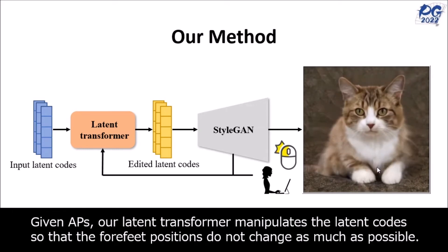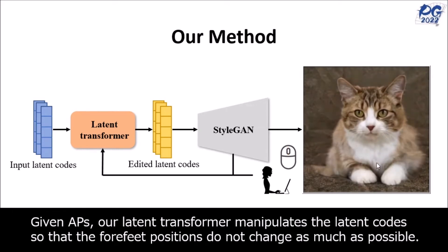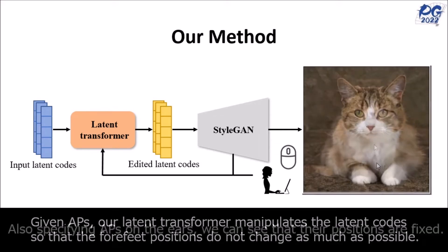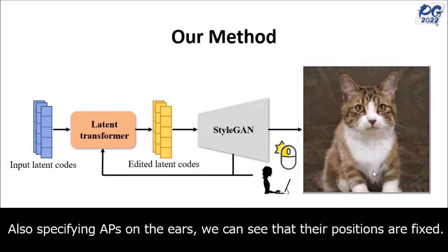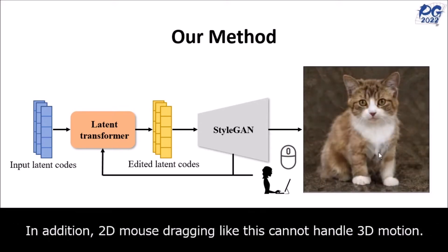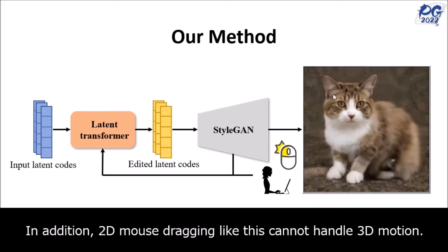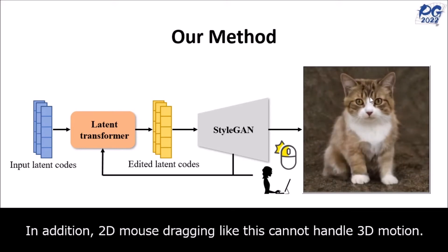StyleGAN has also been used for manipulation of certain types of images. User Controllable LT extends the capabilities of StyleGAN by introducing a latent transformer component. This latent transformer allows users to control specific attributes or features of a generated image by manipulating the latent vectors, which can interpret and work with different types of image inputs.